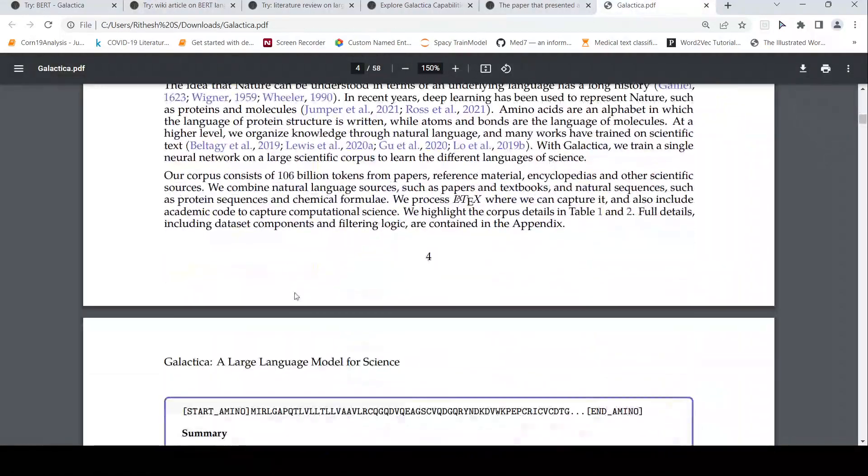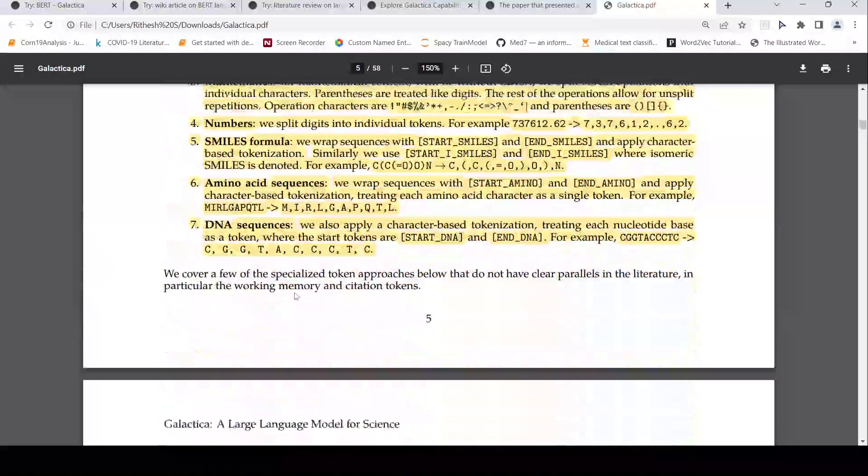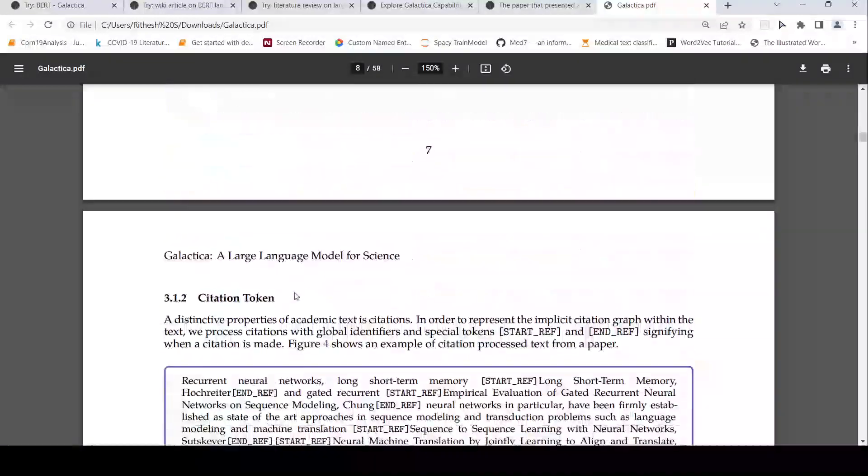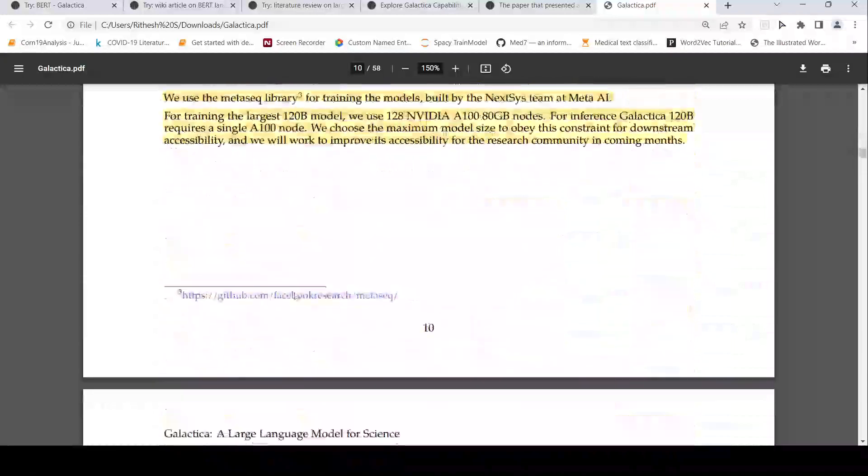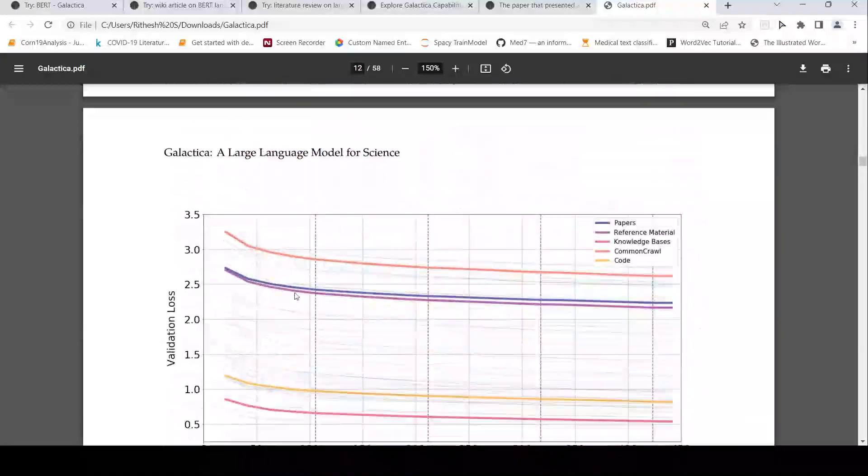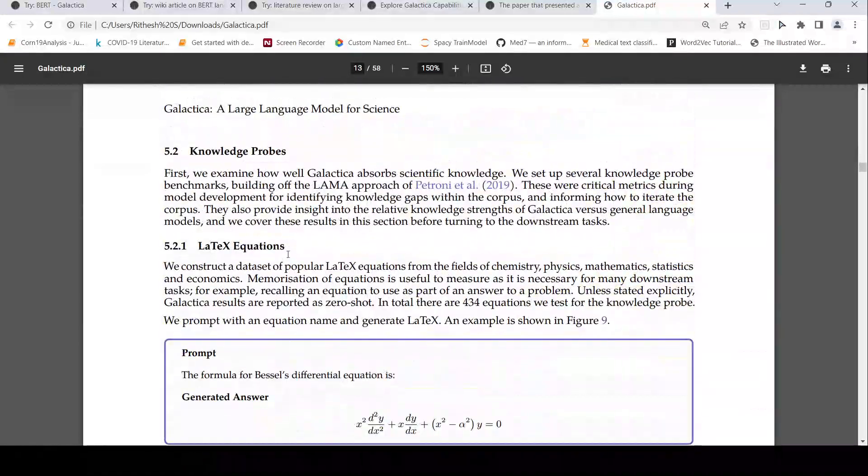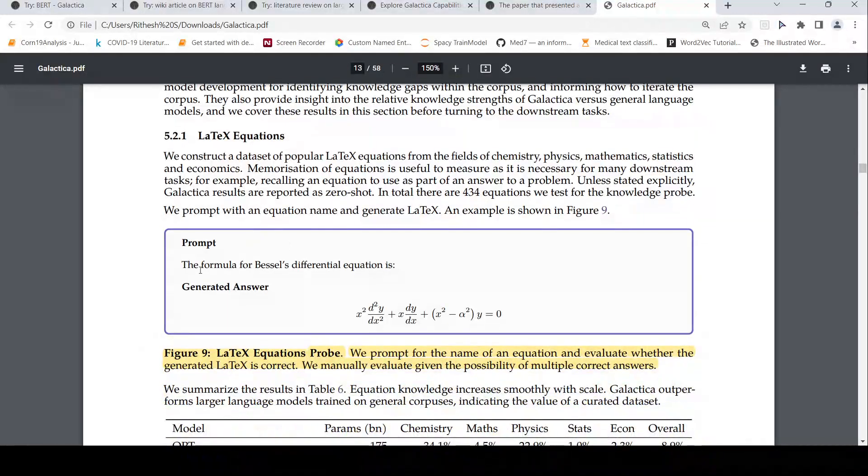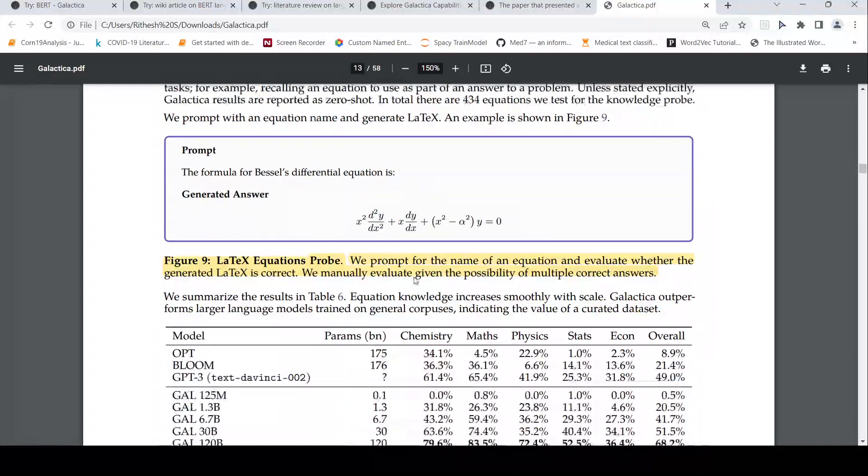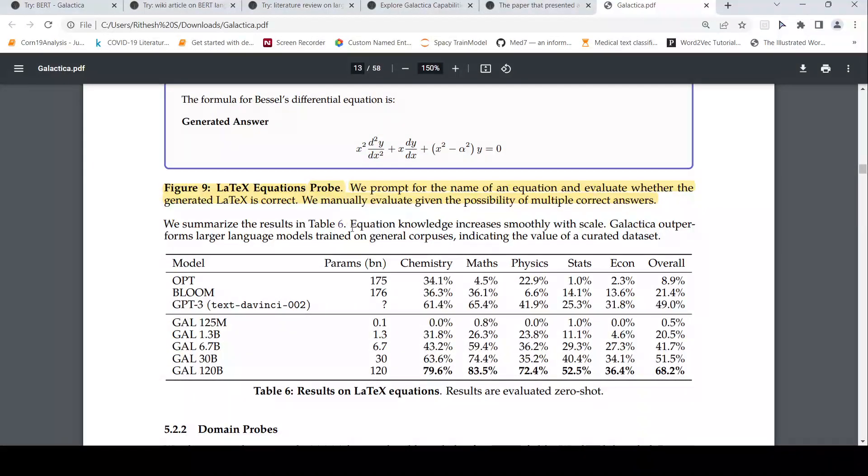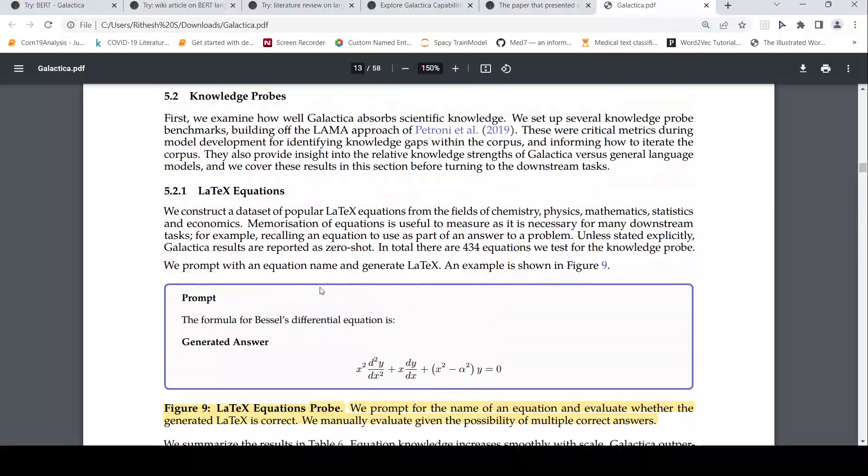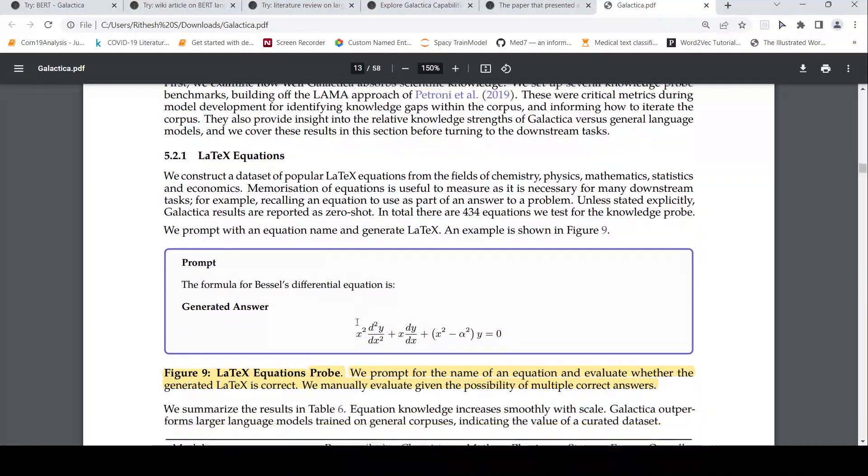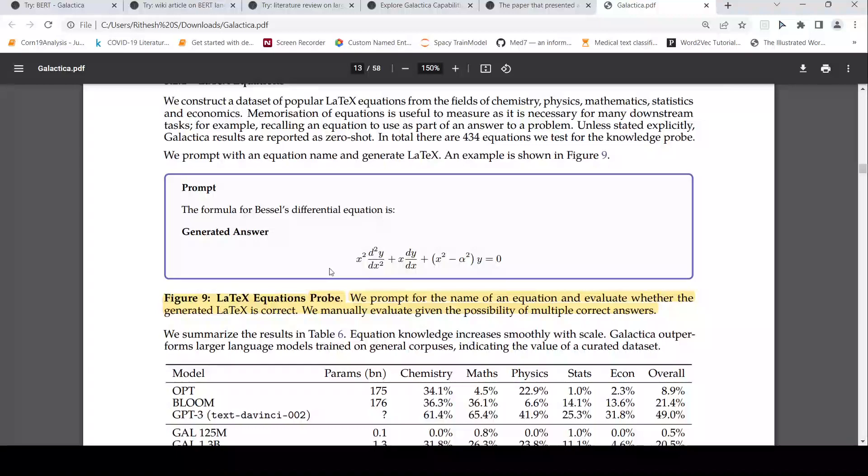What else can this model do? You'll be surprised that this model can do a lot more things. So let me go to that and then come back to some of this architecture and other things because the results look exciting. So it can actually do LaTeX equations. For example, if the prompt is the formula for Bessel's differential equation is, it generates this answer. Quite cool. This is LaTeX equations probe. So you probe for the name of an equation and we prompt to the name of an equation and it gives you the possibility of multiple correct answers. Basically, the LaTeX generated LaTeX is correct.